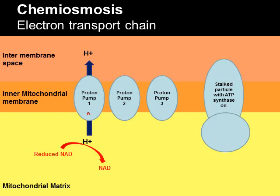Moving the protons through the pumps and into the inter-membrane space is a form of active transport — you're moving protons against the concentration gradient from the matrix into the space. The energy to do this active movement comes from the electron. The electron bumps down to the next proton pump — chemists will notice this is a loss of an electron, which is oxidation.